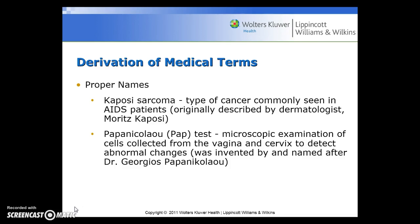Looking at how medical terms are derived from proper names, two examples: Kaposi's sarcoma is a type of cancer commonly seen in AIDS patients, originally described by a dermatologist named Moritz Kaposi. The Papanicolaou test is a microscopic examination of cells collected from the vagina and cervix to detect abnormal changes, and it was invented by and named after Dr. Georges Papanicolaou.